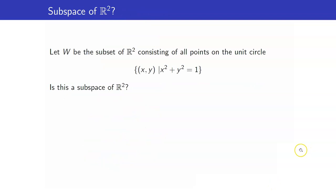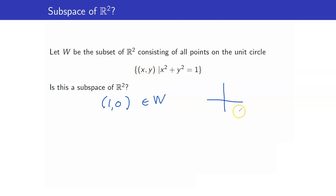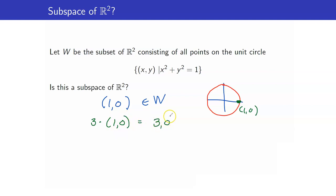What about the set of all points on the unit circle — is this a subspace of R2? Again, the answer is no because it is not closed under scalar multiplication. For example, the point (1, 0) is on the unit circle and in W. But multiplying by 3 gives (3, 0), which is not on the unit circle. So the answer is no.